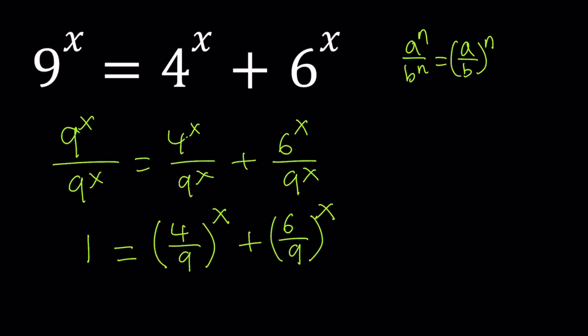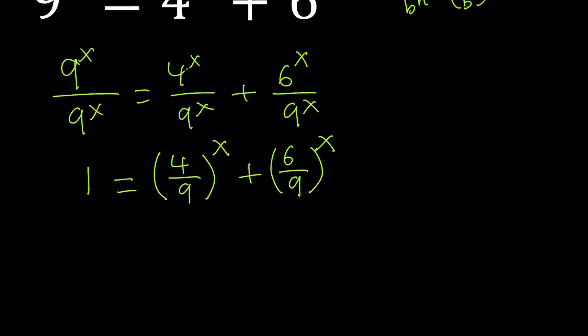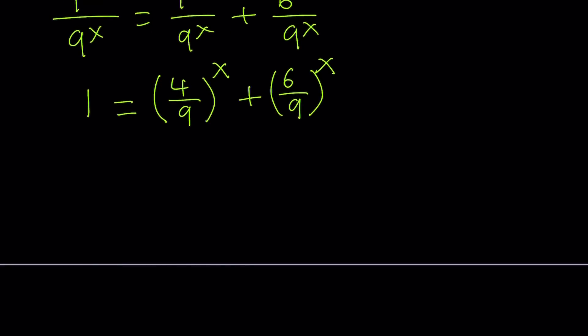Before we start solving it by using substitution, let's simplify this a little bit. 6 and 9 are both divisible by 3, so 6 over 9 can be written as 2 thirds. Let's write it that way and put the right-hand side on the left-hand side and vice versa. This gives us 4 over 9 to the power x plus 2 over 3 to the power x equals 1. We're going to simplify it a little bit more.